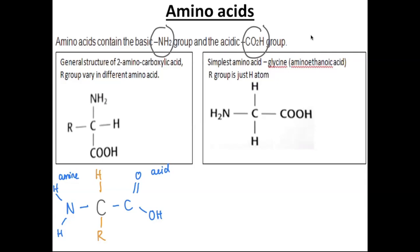Please don't get confused — the R group is called the R group. Usually we use R to represent alkyl, but this time we call it the R group or the side chain of the amino acid. This R group can be found in your data booklet. Unlike biology, you don't have to memorize the R group — the R group will be given.